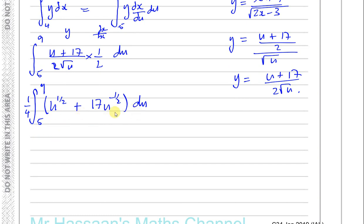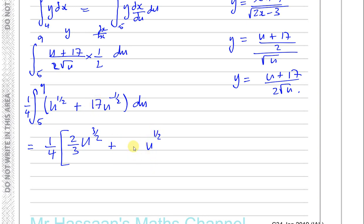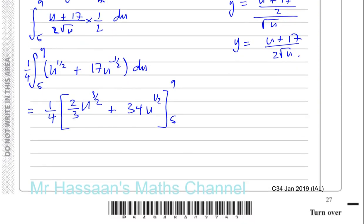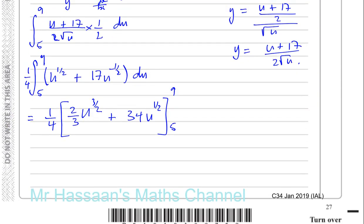Now we're ready to integrate. This gives us a quarter, and I'll change to square brackets. U to the half integrates to U to the 3 over 2 divided by 3 over 2, which is the same as multiplying by 2 thirds — so 2 thirds U to the 3 over 2. Then adding one to the power of minus a half gives U to the power of a half, and dividing by a half is multiplying by 2, so 17 becomes 34. So we have a quarter times 2 thirds U to the 3 over 2 plus 34 U to the half, evaluated between 5 and 9. No plus C needed as this is a definite integral.